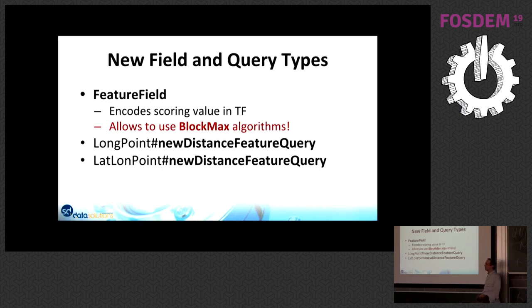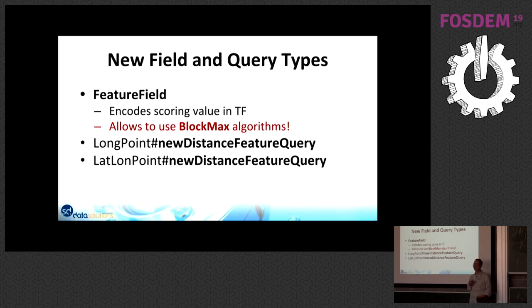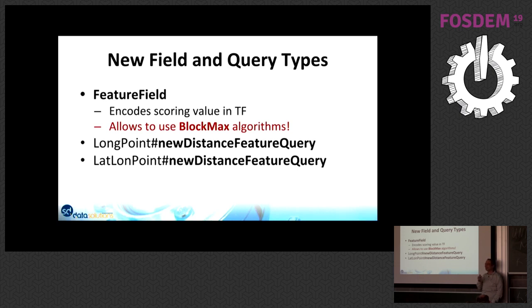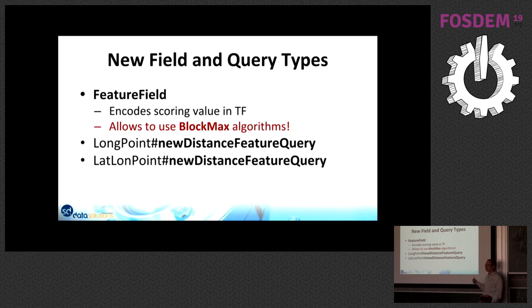In Lucene 8 we have some new field types. One is the feature field, which already exists in previous versions, but now you can use it with the block-max index to jump over documents where you have ranking factors — like page rank — per document. As soon as you use a function query, all the block-max stuff stops working because you don't know if TF and norm in the index are sufficient to determine if a result qualifies.